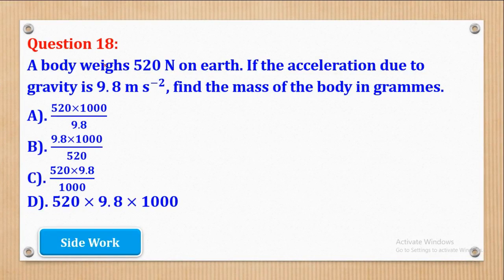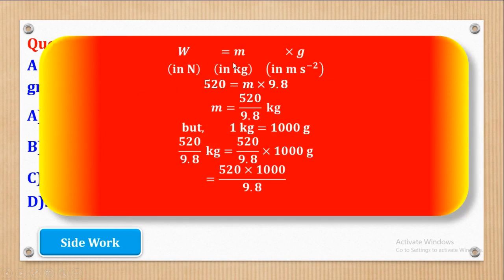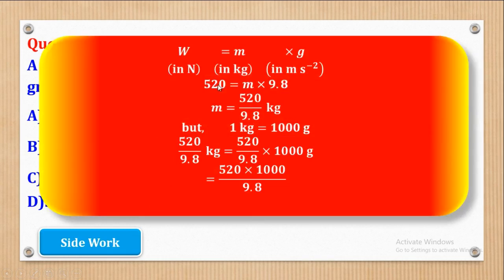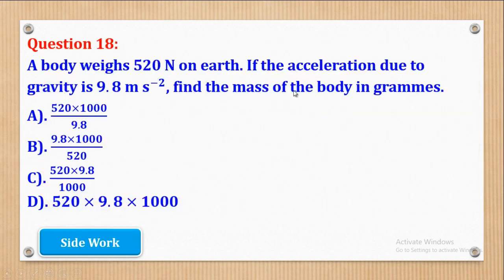Question 18: a body weighs 250 newtons on Earth. If the acceleration due to gravity is 9.8 meters per second squared, find the mass of the body in grams. We know that weight equals mass times acceleration due to gravity. Weight is in newtons and g is in meters per second squared, so solving for mass gives a value in kilograms. The question asks for mass in grams, so we need to convert.